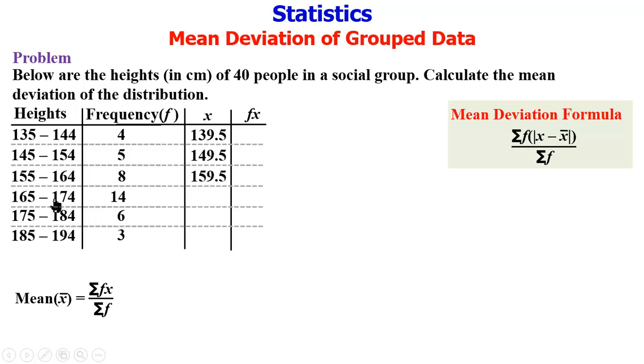165 plus 174 divided by 2 gives 169.5. 175 plus 184 divided by 2 gives 179.5. 185 plus 194 divided by 2 gives 189.5.